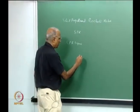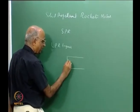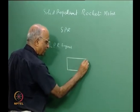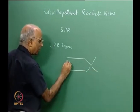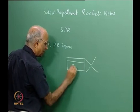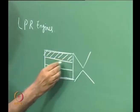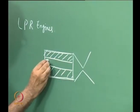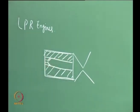Let us look at the construction of a solid propellant rocket. We have a case with some insulation, then a nozzle, and the propellant — maybe a radial burning grain, could be a star or something. We also have an igniter which gives a flame and ignites the propellant. This is all it consists of. There is nothing else in a solid propellant rocket.